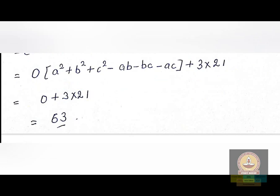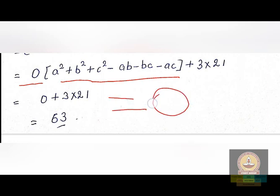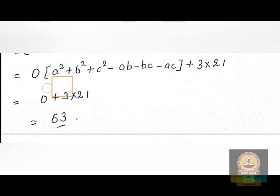We have a + b + c = 0, so the first term becomes 0 multiplied by everything, which equals 0. Therefore a³ + b³ + c³ = 0 + 3 × 21 = 63. So the correct answer for this question is 63.